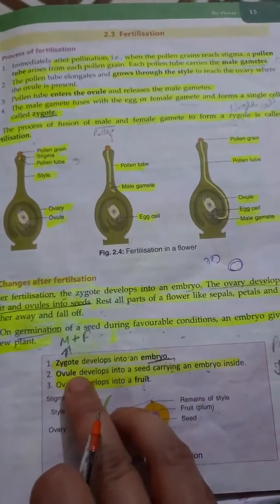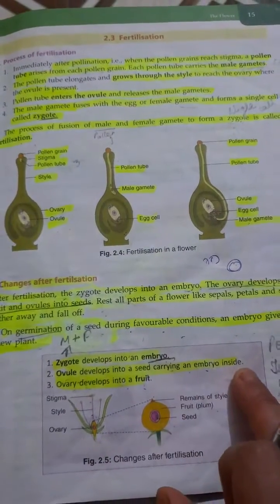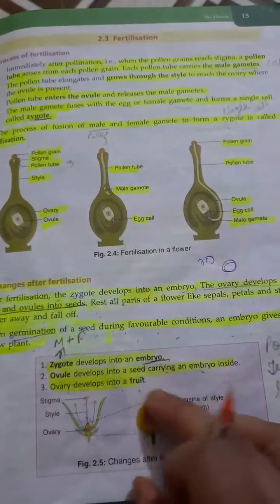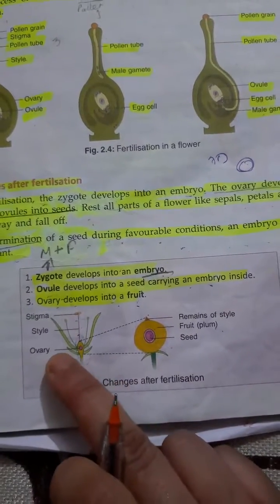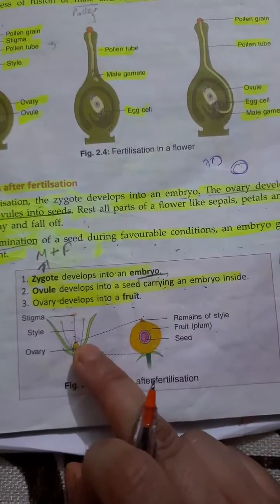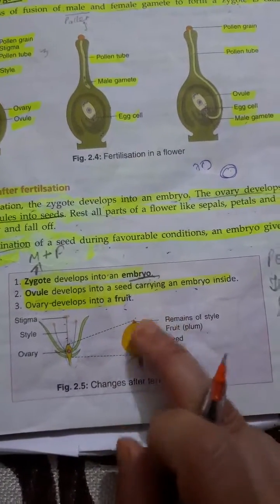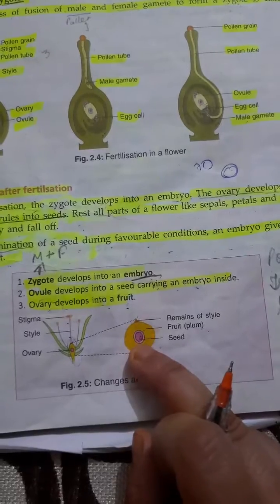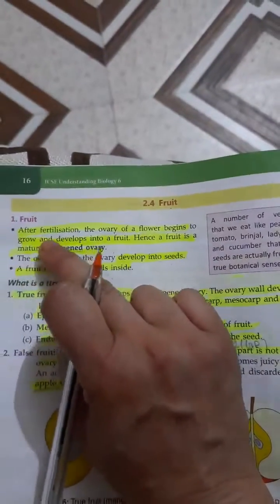The ovule develops into a seed carrying an embryo inside, and the ovary develops into a fruit. As you can see in figure 2.5, the ovary becomes the fruit with a seed carrying the embryo inside. The zygote becomes the embryo, which grows into a new plant.